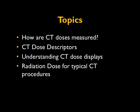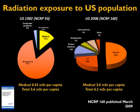Let me start by explaining why CT dose is such an important aspect right now. In this graph we see the radiation exposure to the US population from a variety of sources. On the right-hand side is a pie chart showing radiation exposure to the US population as published in 2009, based on snapshot data from 2006.